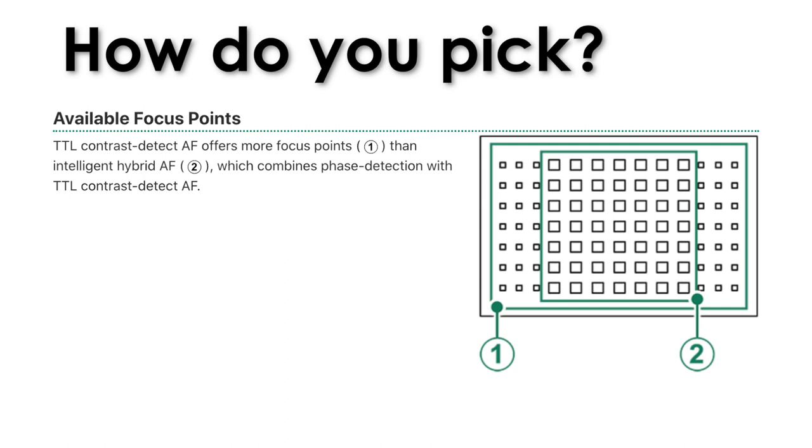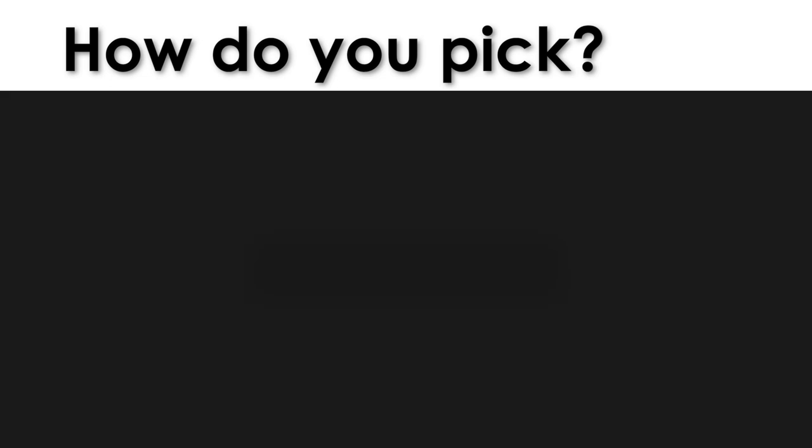So if you do want to track something that's moving, putting it on the edge where there are no phase detection points is only going to give you contrast detection autofocus technology. It's not going to be using the speed of phase detection there. You won't be able to track very well. So if you do want to track something, put it underneath a phase detection point. And then if you know that your camera is going to be utilizing contrast detection, make sure that there is enough light and enough contrast so that the camera can actually pick that up. If you're photographing in very low light or a subject that just doesn't have a lot of contrast at all, it's one solid tone, contrast detection has nothing to work with. And in these cases, you may need to go to manual focus or recompose your scene.